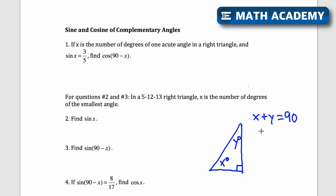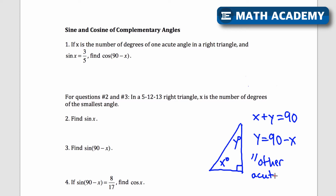If I solve for y, I just subtract x on both sides: y equals 90 minus x. So if you see 90 minus x, that would be the same thing as saying it's the other acute angle in a right triangle. Let's think of 90 minus x as the other acute angle.